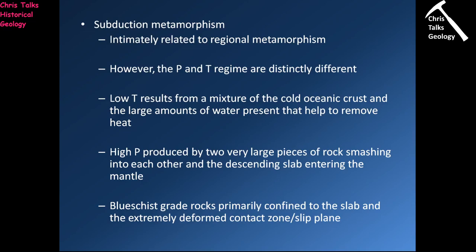The subducting oceanic crust is under significant pressure. However, the temperature is kept artificially low due to the circulation of water - water in the minerals, in cracks in the rock, and in the sediment on top of the oceanic crust being subducted. This water gets heated up and circulates out of the area, cools down and returns, constantly taking heat away from the subduction zone and redistributing it elsewhere.